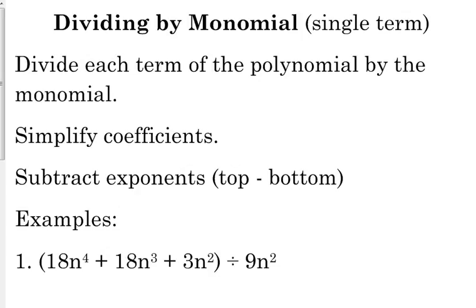So the way that we handle that is we just divide each term of our polynomial by the monomial. When we do that, we simplify the coefficients, and your exponent rules say that you subtract exponents, top minus bottom. So let's look at that first example there.